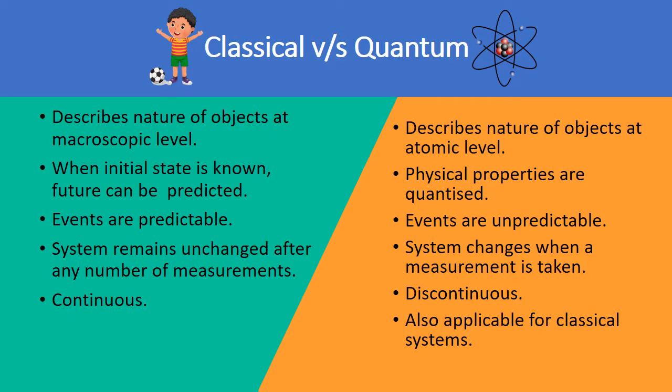There are a lot of differences between classical mechanics and quantum mechanics. First of all, classical mechanics describes the nature of macroscopic particles while quantum mechanics describes the nature of atomic level objects. In classical mechanics, if we know the initial state of a particle, we can predict its future. While in quantum mechanics, the future is always unpredictable. In quantum mechanics, the physical properties such as energy, momentum, etc., are quantized while in classical mechanics, all the physical properties are continuous. Events in classical mechanics are always predictable while quantum mechanics is highly unpredictable.